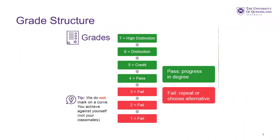This is the grade structure here at UQ. A seven is a high distinction, a six is a distinction, a five is a credit, and a four is a pass — as long as you get one of those marks, you will pass your course. If you get a three, it is a fail, but you can potentially apply for supplementary assessment. This is an additional piece of assessment to cover skills you may have missed — if you pass the supplementary, you receive a four and pass the course. A two or one is a fail with no supplementary available; at that point you need to decide whether to repeat the course. Note that we don't mark on a curve — you're achieving it yourself, not against your classmates.